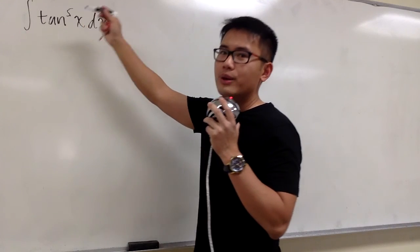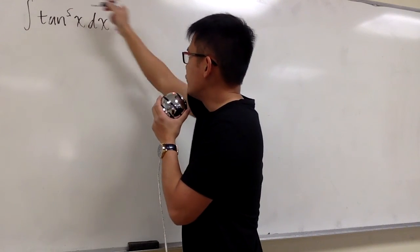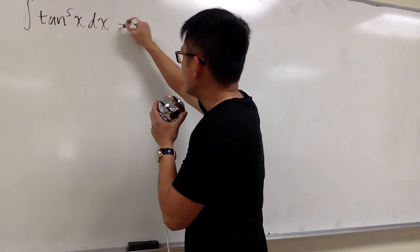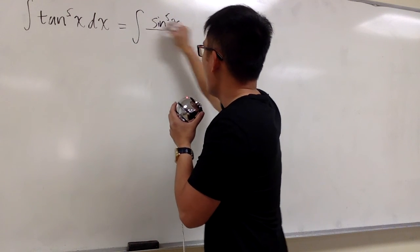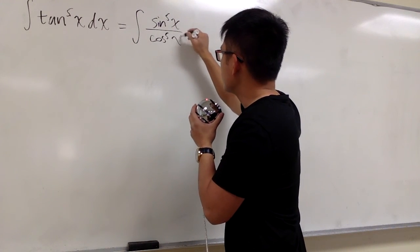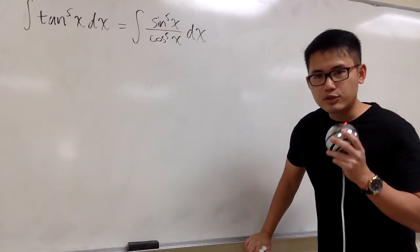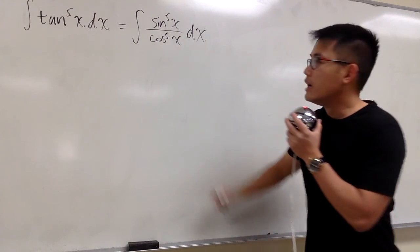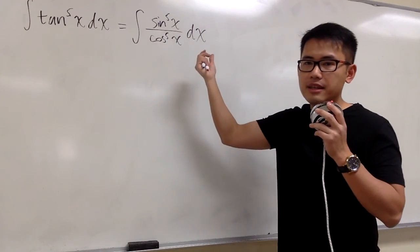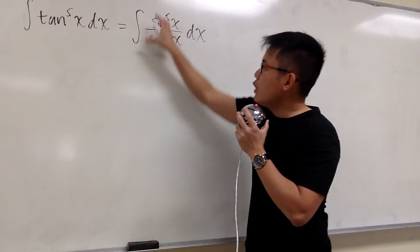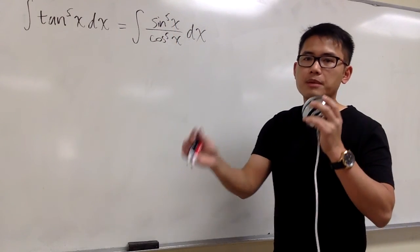We know tangent x is equal to sine x over cosine x. So tangent to the fifth power of x is the same as sine to the fifth power of x over cosine to the fifth power of x. The strategy is: on the numerator, I'm going to take out one of the sine factors, and then for the rest I will change everything in terms of cosine.